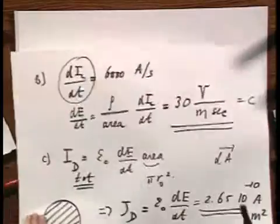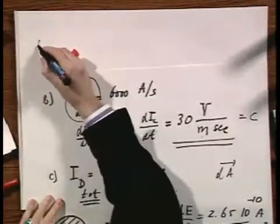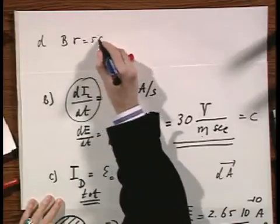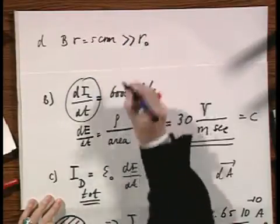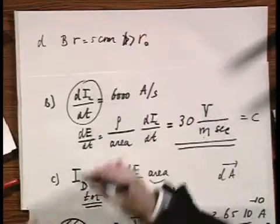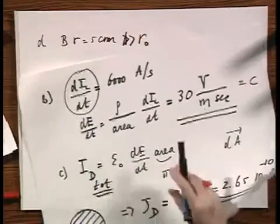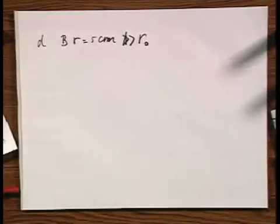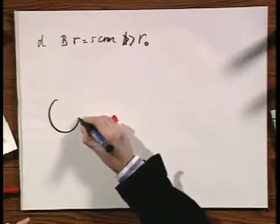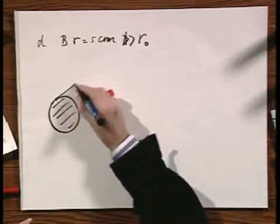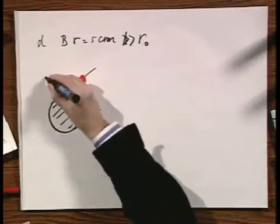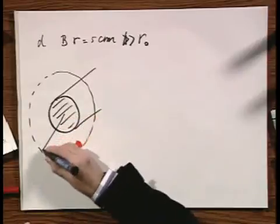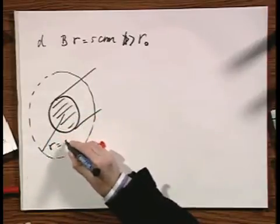You're being now asked to calculate the magnetic field B at a distance r from the wire, which is 5 centimeters, which is larger than r₀. It doesn't have to be much larger. It happens to be larger than r₀. So it's outside the surface.